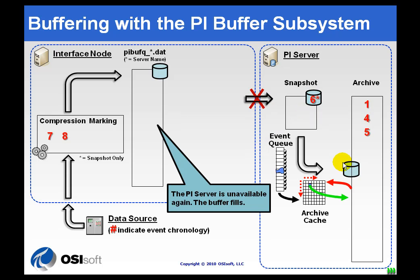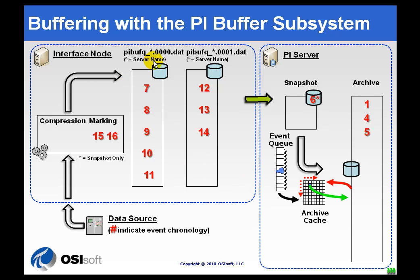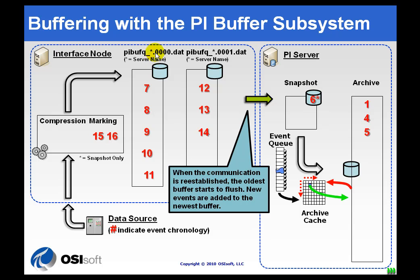If the same situation occurs again but doesn't resolve quickly, and the first buffer fills, then we are going to overflow to a second buffer. This buffer is called PIBUFFQ underscore and then the name of your server, with numbers appended at the end indicating which file it is. If the first one fills, we start a second one. Once communication is reestablished, since this is a FIFO queue, we start retrieving data beginning with the first data that came in — values 7, 8, 9, 10, etc.